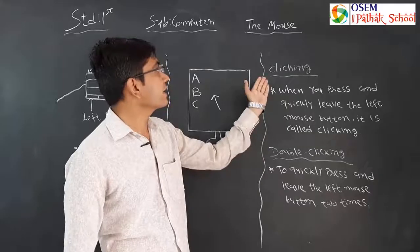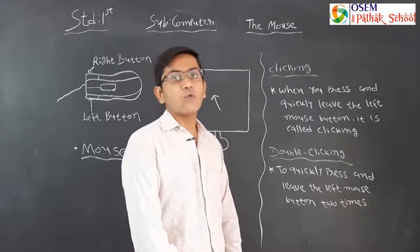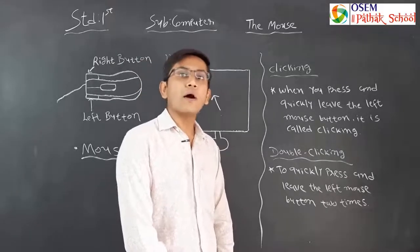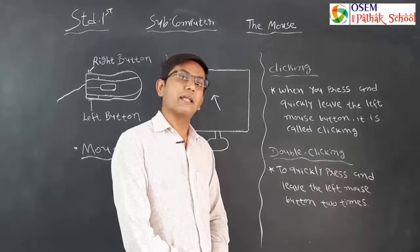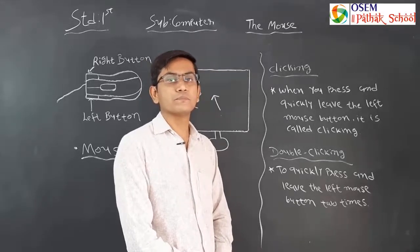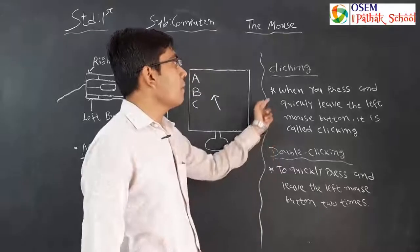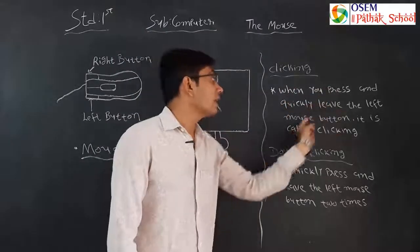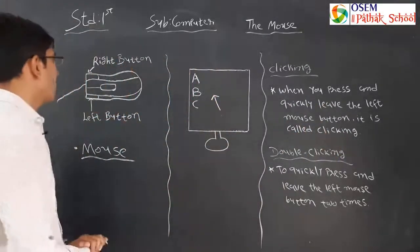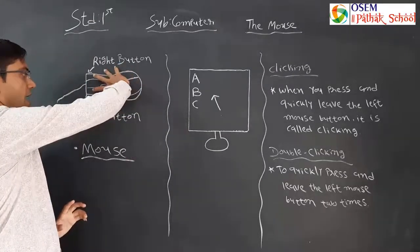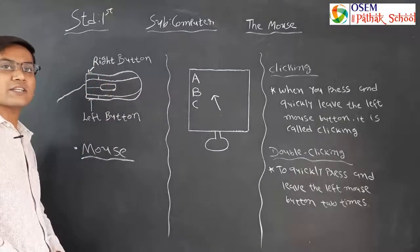First, let's understand clicking. For this action, you have to hold the mouse with your palm. The mouse generally has two buttons: the left mouse button and right mouse button. When you press and quickly release the left mouse button, it is called clicking. When you want to select any item or perform an action, you use clicking.